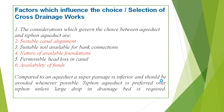The considerations which govern the choice between an aqueduct and a siphon aqueduct are based on the factors explained. Compared to an aqueduct, a super passage is inferior and should be avoided whenever possible. A siphon aqueduct is preferred over a siphon unless a large drop in the drainage bed is required.